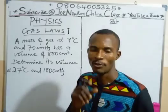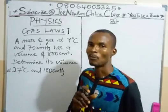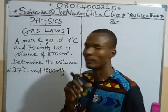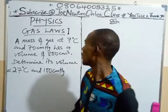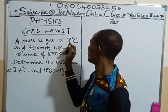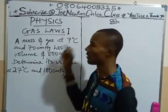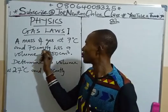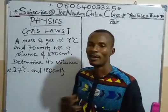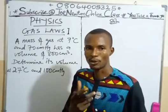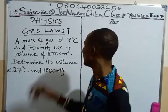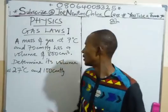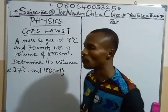You should be mindful of the units of these quantities. 7 degrees Celsius stands for the temperature, 70 centimeters of mercury stands for pressure, and 800 centimeter cube stands for volume. Likewise for the second set of values.